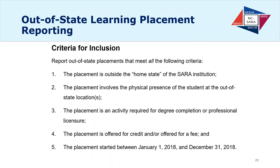I think number three still needs some work — I'm waiting to see how the feedback comes back this year. Number four is also a tweak: the placement is offered for credit and/or offered for a fee. Finally, the placement started between January 1 and December 31, 2018. I do want input as you go through this — feel free to send comments about how these criteria work for you. As you can see, feedback really does work because last year we removed 'formal agreement' based on what we heard.